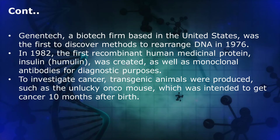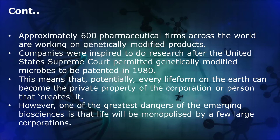Genentech, a biotech firm based in the United States, was the first to discover methods to rearrange DNA in 1976. In 1982, the first recombinant human medical protein, insulin (Humulin), was created, as well as monoclonal antibodies for diagnostic purposes. To investigate cancer, transgenic animals were produced, such as the Onco mouse, which was intended to develop cancer 10 months after birth. Approximately 600 pharmaceutical firms across the world are working on genetically modified products. Companies were inspired to do research after the United States Supreme Court permitted genetically modified microbes to be patented in the 1980s.